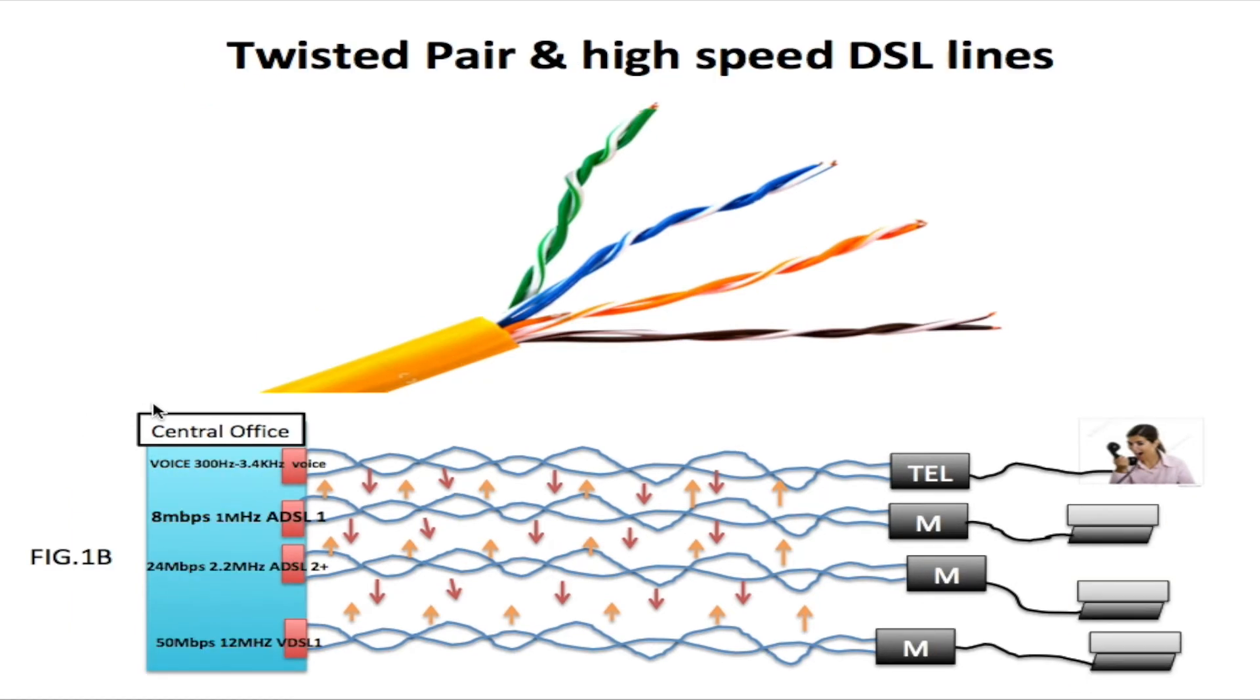On this slide we are showing that we cannot only send voice lines on twisted pair, we can also send high-speed internet lines. We have ADSL1, ADSL2 plus, and the VDSL1 line here. The differences between these lines that I want to show is that for a voice line it operates between 300 hertz and 3.4 kilohertz. For an ADSL1 type line, in order to get 8 megabits per second, we have to operate it at a frequency of 1 megahertz. For ADSL2 plus line, in order to get 24 megabits per second, we operate it at a frequency of 12 megahertz.